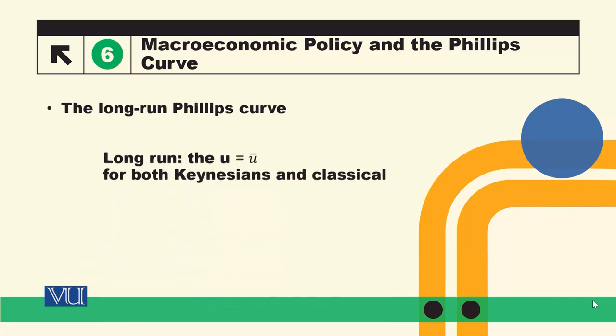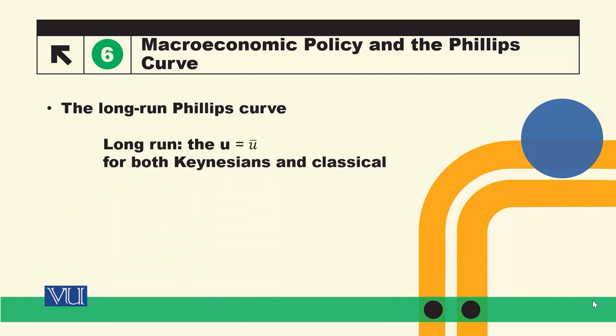In the long run, what happens to the Phillips curve? Both Keynesian and Classical economics share a consensus that there is no relationship in the long run. In the short run, there is disagreement. Classical economists say the short run is so short as to be irrelevant. But in the long run, both schools agree there is no relationship between inflation and unemployment.